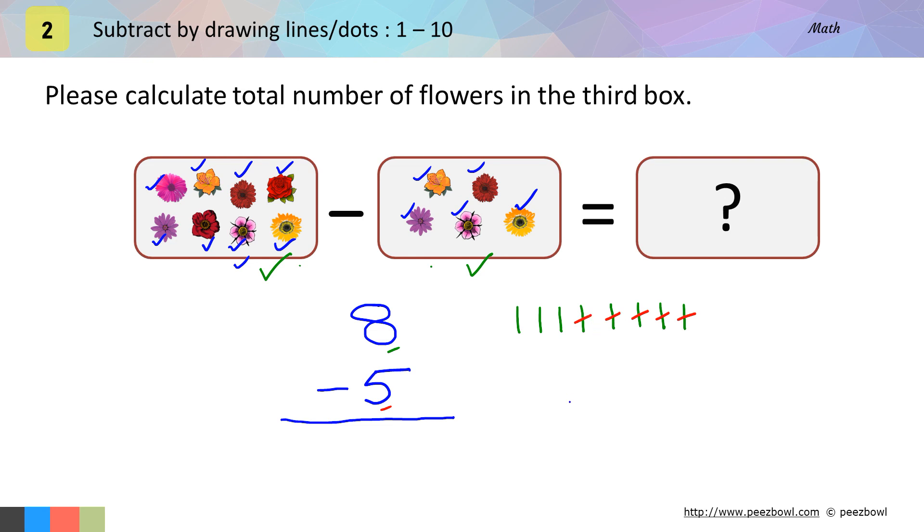Now, let us count rest of the lines which I did not cut. We have 1, 2 and 3 such lines which I did not cut. So, result of this subtraction is 3. We can say that 8 minus 5 is equal to 3. So, there will be 3 flowers in the third box.